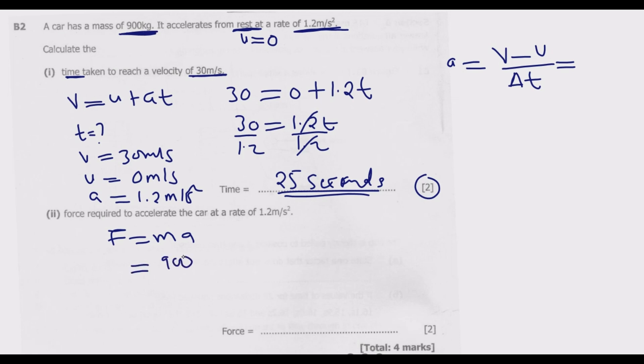So what you do is we have 900, then multiply by acceleration, which should be in meters per second squared. So multiply by 1.2. Once we multiply that, we are going to get 1,080 newtons.